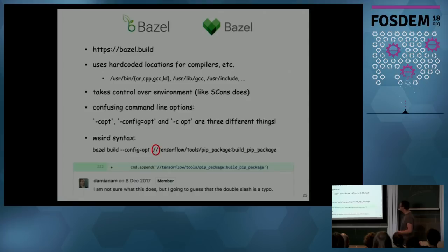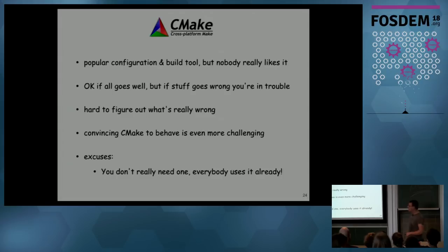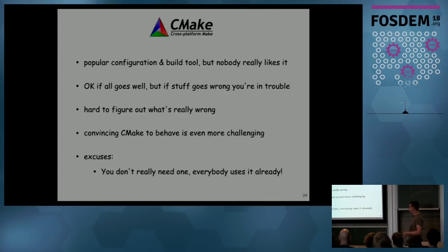CMake: very popular. I want to make the claim that nobody really likes it — maybe I'm wrong. It's pretty okay if all goes well, it does the job. But when it doesn't, you're in trouble: you need to find the log file of CMake, which is somewhere deep in a subdirectory, and it has everything that possibly went wrong during configuration — including stuff where it's actually okay that it went wrong, because it's just testing things. And then convincing CMake to behave if you have to patch CMake scripts is very difficult. Excuse to use it: you don't need one — everybody's using CMake already.